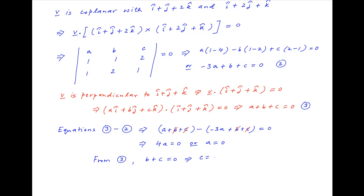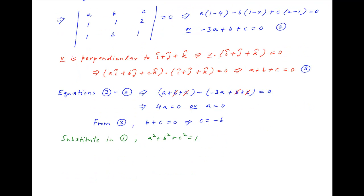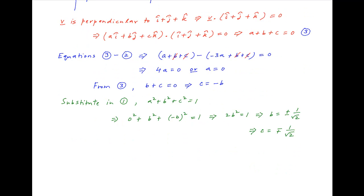This implies that c is equal to minus b. Substituting into equation 1: a equals 0, so b squared plus b squared equals 1, which implies that 2b squared is equal to 1, which implies that b is equal to plus or minus 1 upon root 2. Therefore c, which is equal to minus b, is equal to minus plus 1 upon root 2.